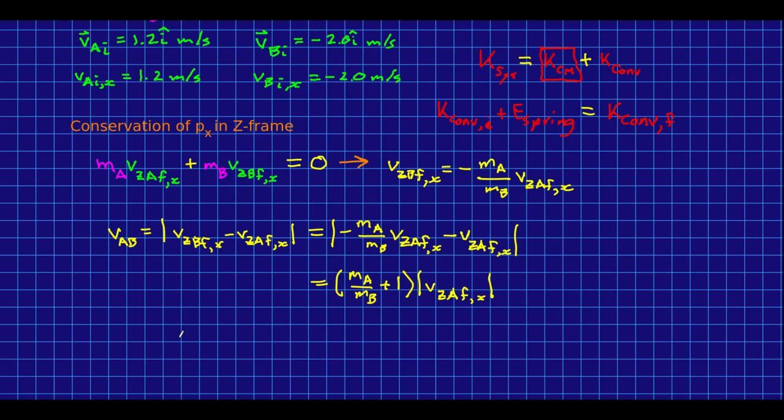This is now useful because we can just rewrite all of this in terms of the convertible kinetic energy. So our final convertible kinetic energy is just a half mu VAB final squared, or in other words,